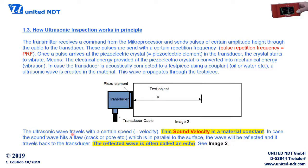The ultrasonic wave travels with a certain speed — this is the so-called sound velocity, a very common and important expression. Sound velocity is a material constant — shown on a yellow background, meaning important to understand. For example, if you have an unknown material, you can measure the sound velocity using an ultrasonic instrument, and from a table of sound velocities for different materials, you can identify what material it is. Ultrasonic inspection is actually used for that purpose as well.